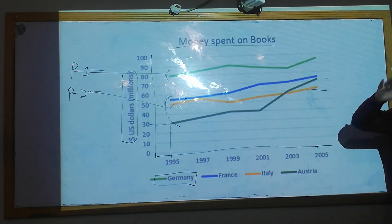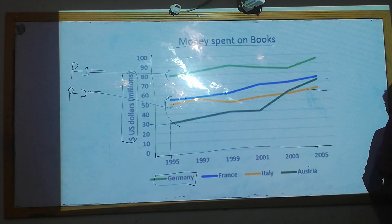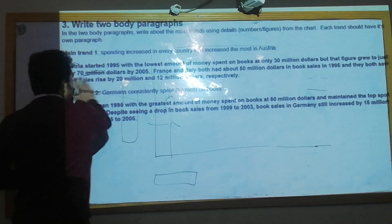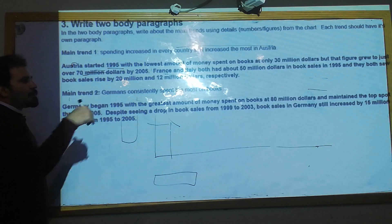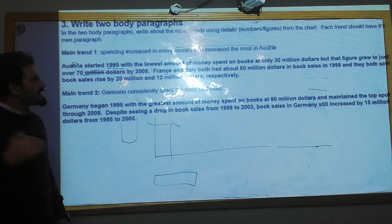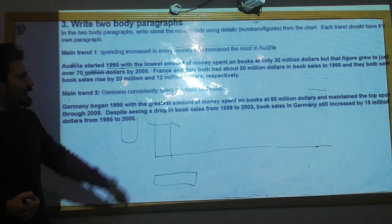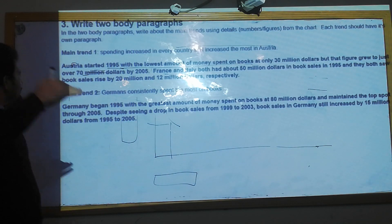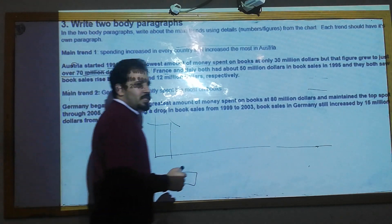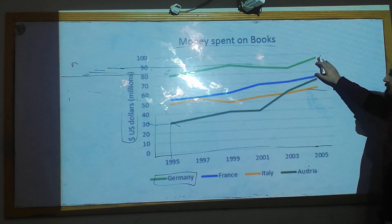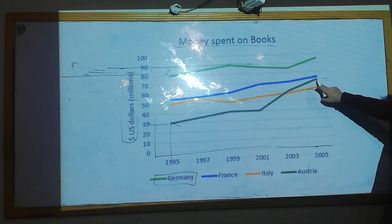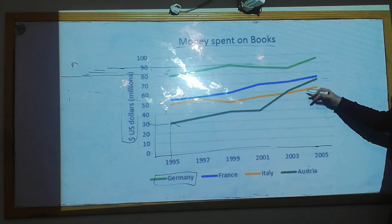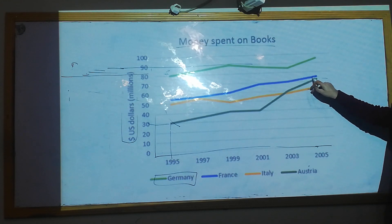Now let's write a proper paragraph on these three countries. Austria in 1995 started with the lowest amount of money spent on books — only 30 million dollars — but the figure grew to just below 70 million dollars by 2005, showing a clear improvement over the period.